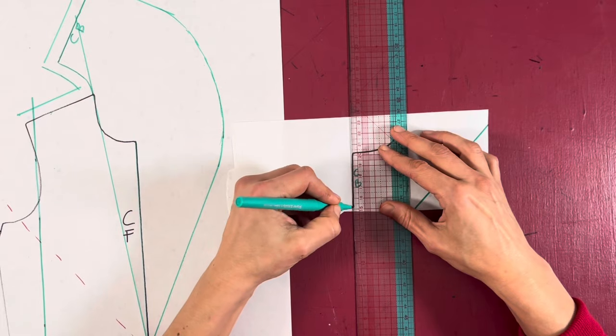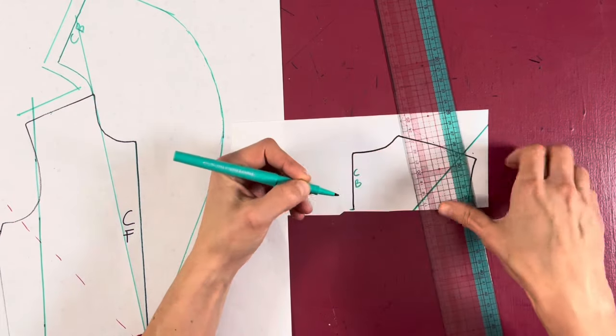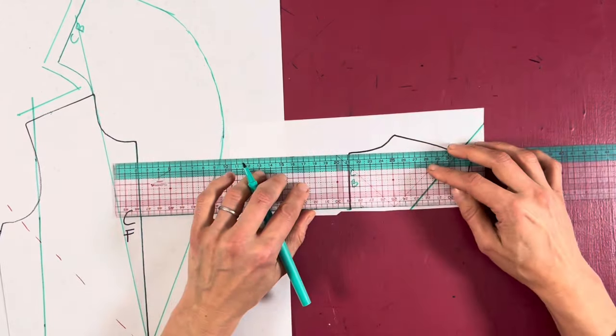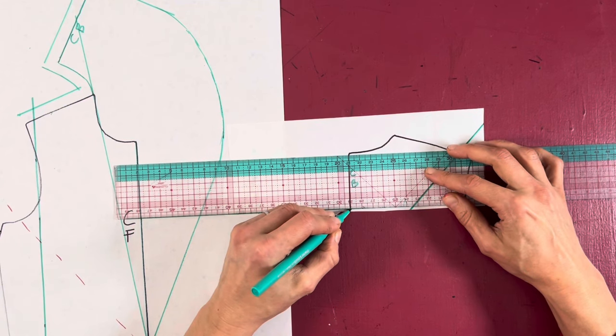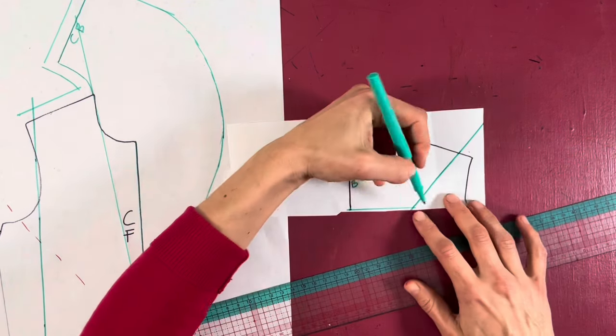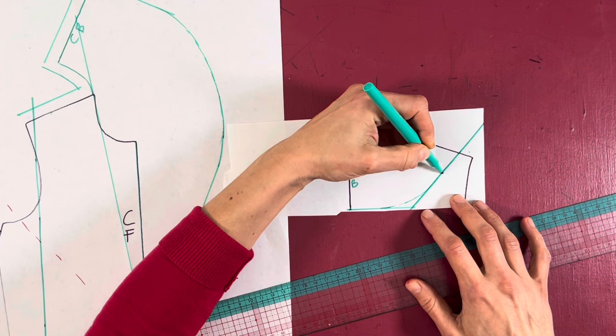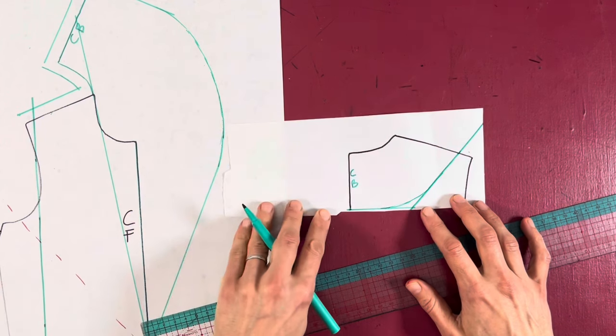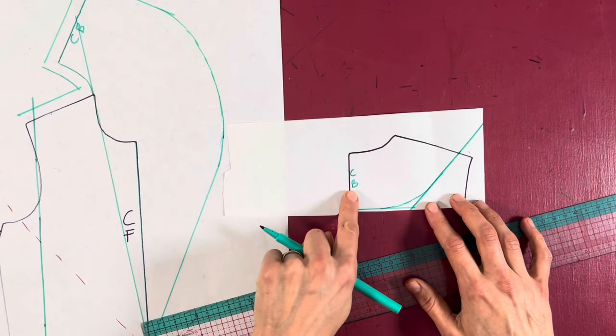Now we can just draw again a right angle from our center back. And if we want to, we can make it the same width as is at the shoulder. I'm going to draw a line to meet, and then again I'm going to use my pattern master to draw a really nice curve connecting the two. You can now